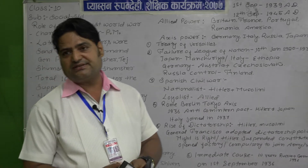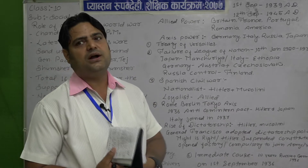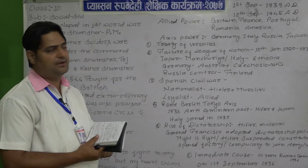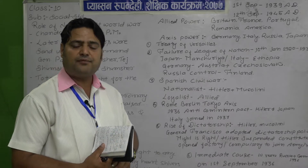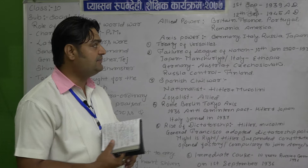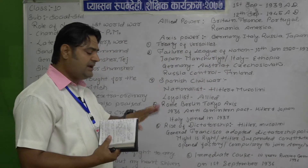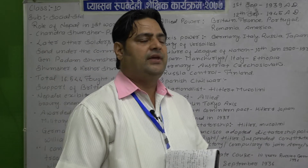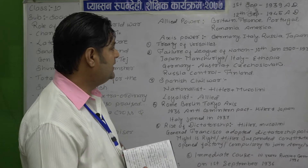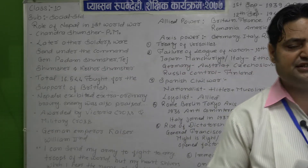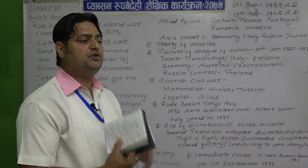Now today's topic moves to the causes and results of the Second World War. The war started on 1st September 1939 and continued until 12th September 1945, after the surrender of Japan. This war is known as the Second World War and was more destructive than the First World War in the history of the world.